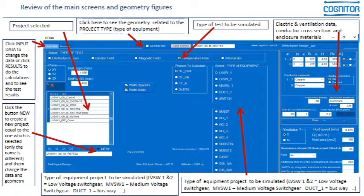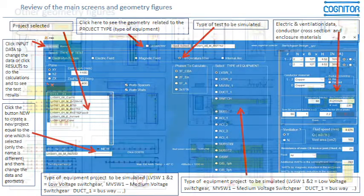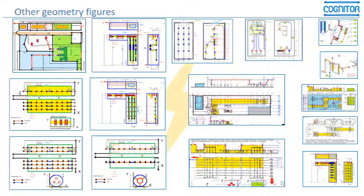On the right side you have a list of electrical and ventilation data like conductor cross-section, materials of conductors and the enclosures. You have rated currents which will be applied in the temperature rise test, and all data which will characterize the project. Isolators and expulsion type fuses are used only for customizing the project for specific clients and are not available in this version of the software.